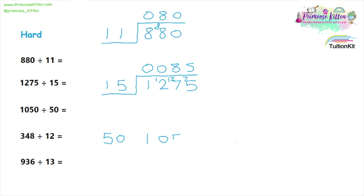1050 divided by fifty. How many fifteens will go into one? Zero — carry the one over. How many fifteens in ten? Zero — carry the ten over. So how many fifteens are in one hundred and five? That is two, and then carry the five over. And how many fifteens are in fifty? That is one.